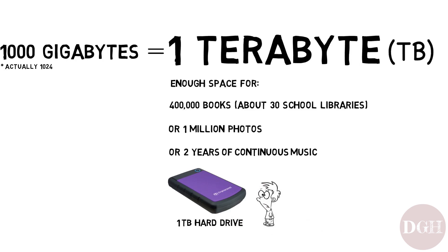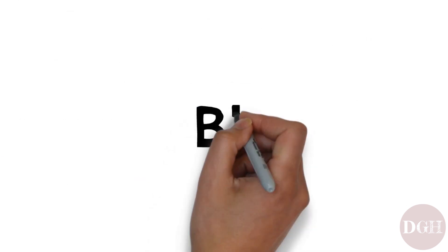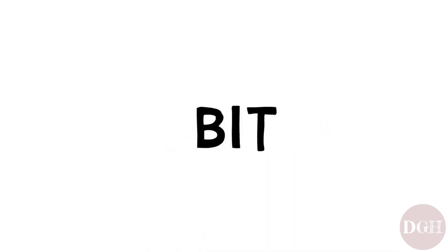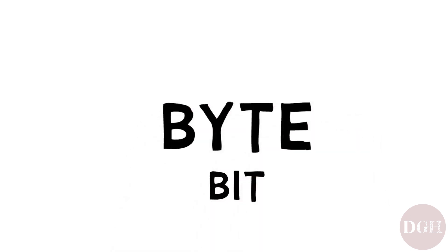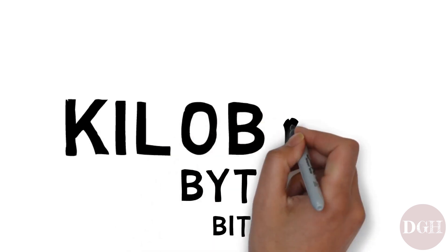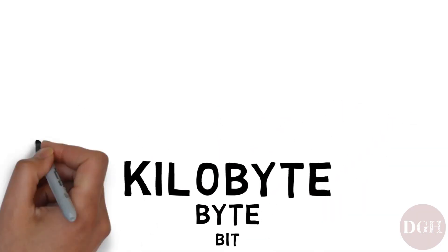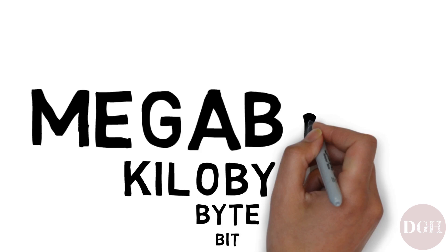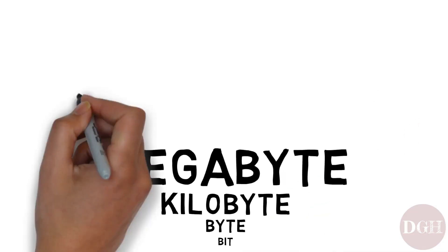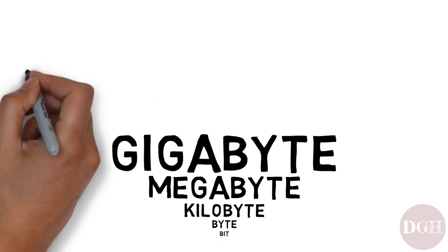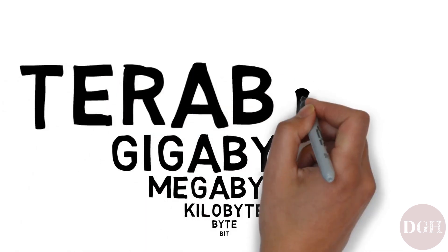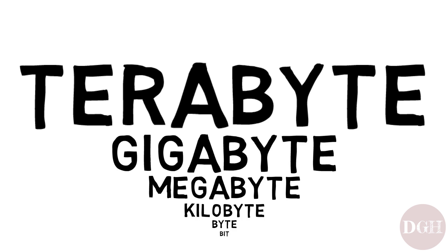To recap: we talked about bits, how there are 8 bits in 1 byte, 1,000 bytes in 1 kilobyte, 1,000 kilobytes in 1 megabyte, 1,000 megabytes in 1 gigabyte, and 1,000 gigabytes in 1 terabyte. I hope you've enjoyed this video and that you have a better understanding of digital storage terminology.